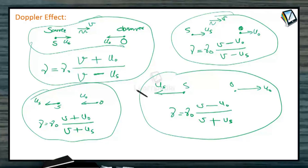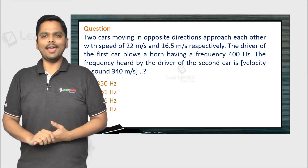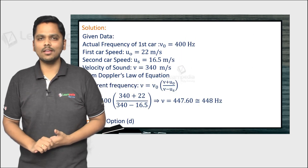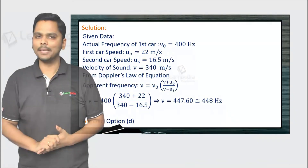All these formulae are valid only when the source velocity is not greater than the speed of sound. The Doppler effect is applicable only when the source is moving with a speed less than that of sound. Here is the answer to the question that was asked in the beginning.